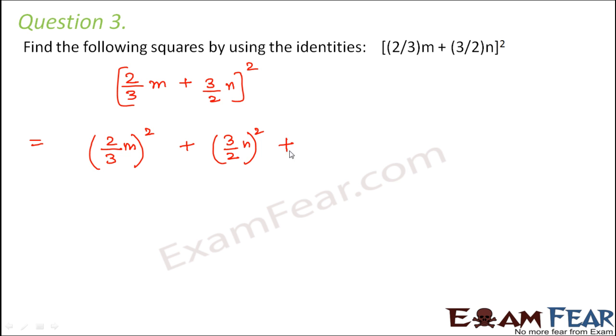Let's solve this. This becomes 2×2 is 4, 3×3 is 9, m×m is m². 3×3 is 9, 2×2 is 4, n×n is n². And here, 3 will cancel with 3, 2 will cancel with 2, so this would be 2mn.